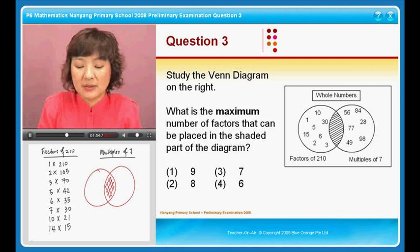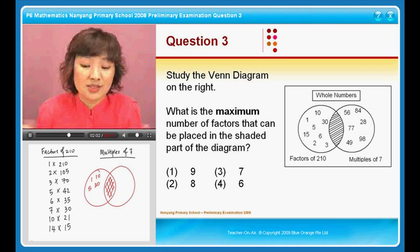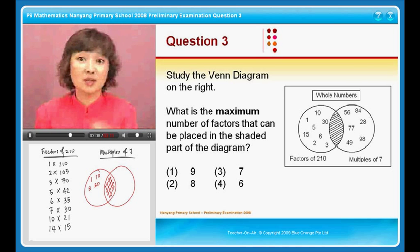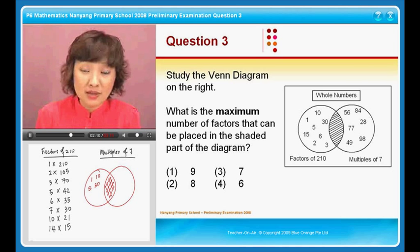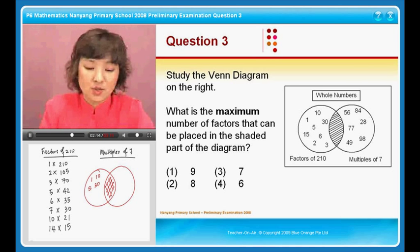So if you look at the numbers here, 1, 10, 5, 30, these are all factors of 210, but they are not multiples of 7. So the simple thing to do here is basically to look at the factors of 210 and pick up all the multiples of 7. Do you know how to do that? Of course, just run through your mind which are the multiples of 7. So if you go down the line...